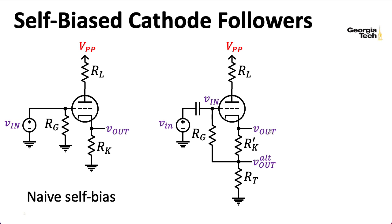Notice that there are two places you can take the output from. I'm mostly going to be talking about taking the output from the cathode directly. Some folks will take it out of the junction between this RK prime and RT. Usually RT is much, much, much bigger than RK prime. So you don't get a lot of loss through this voltage divider. And I should also mention that I'm ignoring RG in that discussion, because this RG is much bigger than RT.